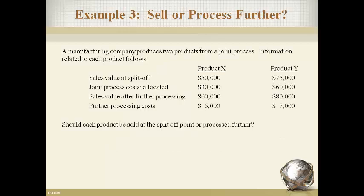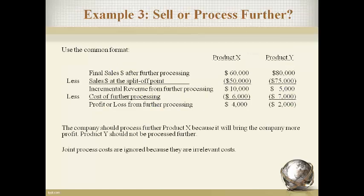Our next example is a decision to sell products as they are or process them further into different products and sell for a higher price. The first step is to identify the relevant revenues and relevant costs. The difference in sales value at split-off and the sales value after further processing is the change in revenues, and the further processing costs are the only relevant costs that change. The joint process costs must be incurred regardless of the decision and are therefore irrelevant. Product X is more profitable and product Y is less profitable if processed further.